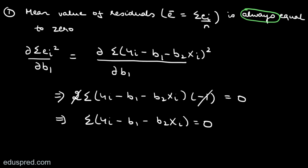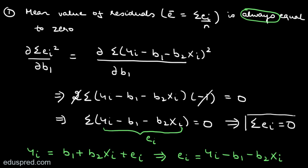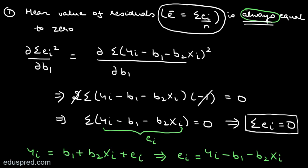Now observe this expression: summation of (yi minus b1 minus b2*xi) equals zero. This is nothing but ei, because our sample regression equation is yi = b1 + b2*xi + ei, which gives us ei = yi minus b1 minus b2*xi. So this implies summation ei equals zero, and if summation ei equals zero, then e-bar, the mean value of residuals, is also equal to zero.